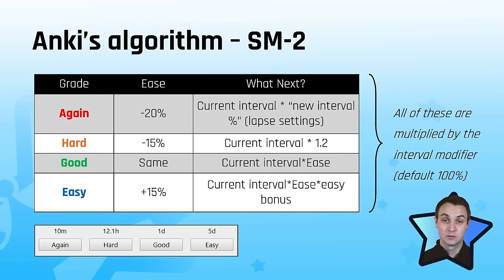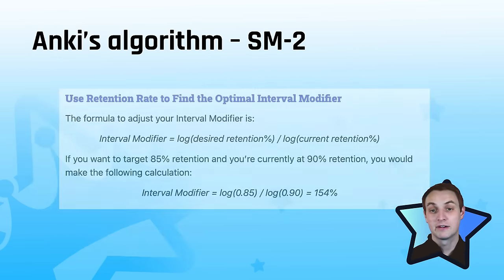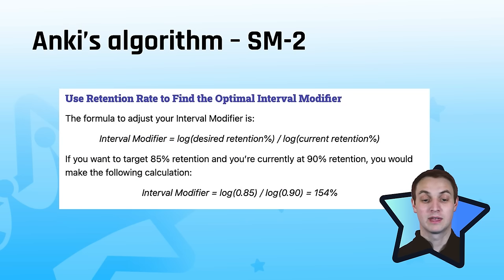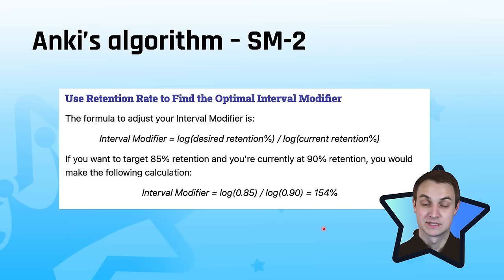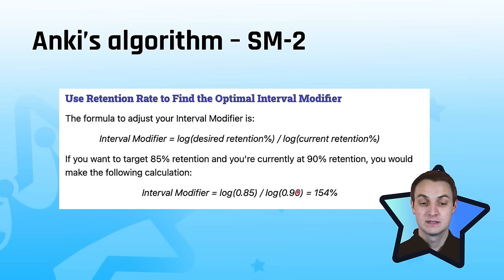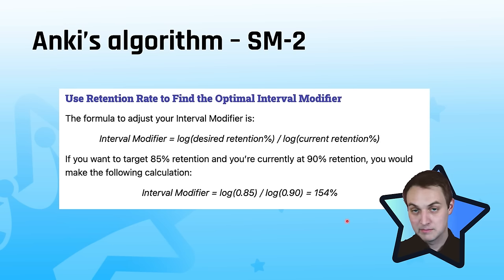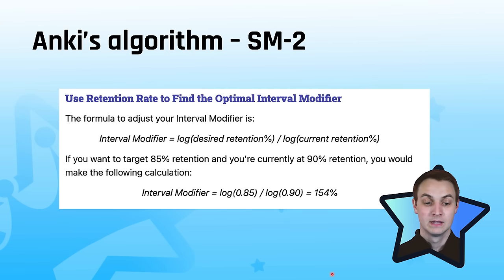All intervals are multiplied by an interval modifier, which most people haven't changed because it's at 100%. But there's a formula you can use — for example, if you're at 90% retention and want to get to 85%, you can change your interval modifier to 154%. That multiplies every card by 154%, so you won't get things right as often — it'll be 85% instead of 90% — but theoretically you'll have a lower card burden and spend less time reviewing.